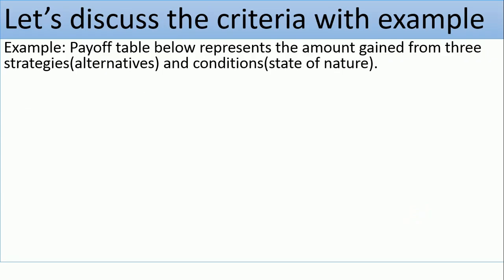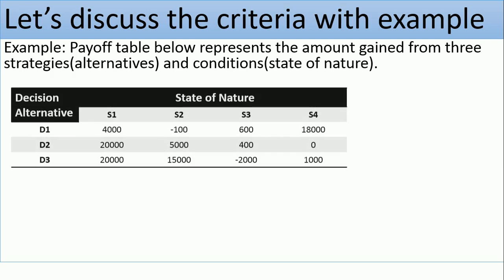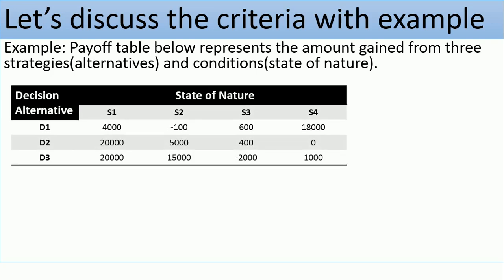Let's look at each of these criteria using an example. The payoff table below represents the amount gained from three strategies and conditions. This is a typical example of decision-making under uncertainty because it has more than one state of nature for each decision alternative. For decision alternative D1, it has S1, S2, S3, and S4 — more than one state of nature. The same applies for D2 and D3.